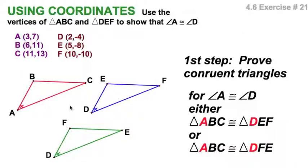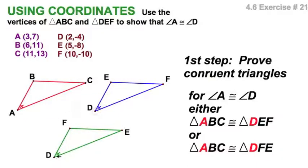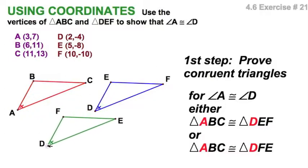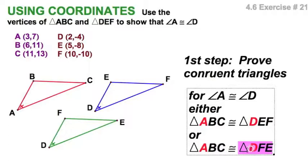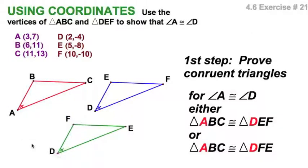However, if these two triangles, I'll say the red and the blue were not congruent, we would also have to check this. What if triangle ABC was congruent to triangle DFE? Well that would also result in angle A being congruent to angle D. So you would have to check that possibility as well.